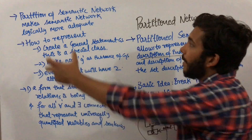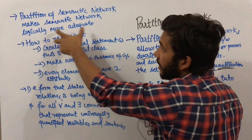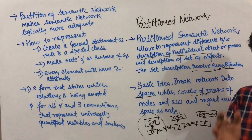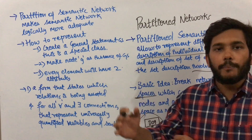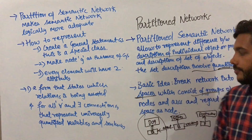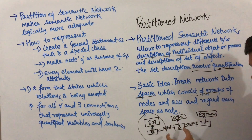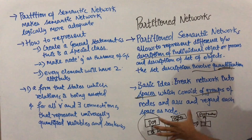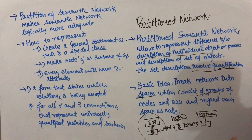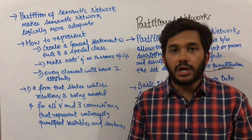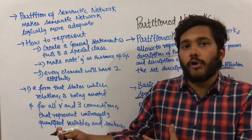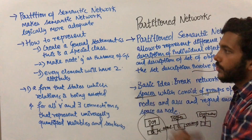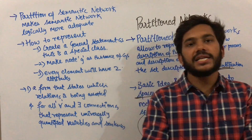Partitioning a semantic network makes it logically more adequate. It allows the network to represent information in a more complex and informative manner. For example, dog D is an agent, the postman is a receiver, and B stands for bites. In partition network we can describe objects and sets of objects in a more informative and logical way.